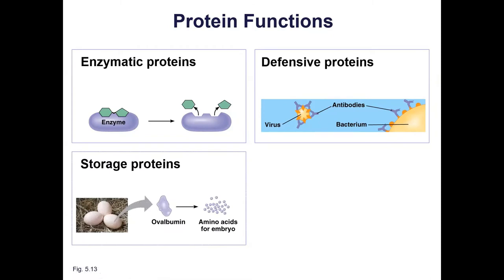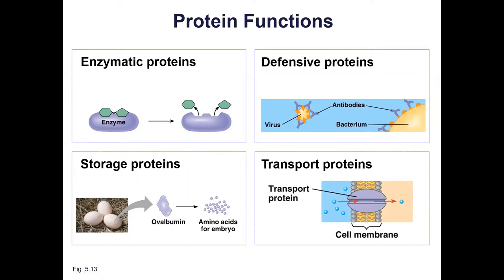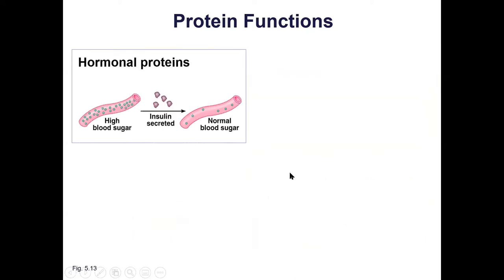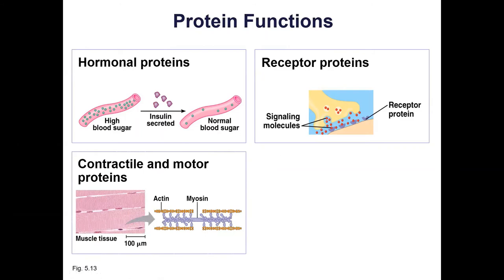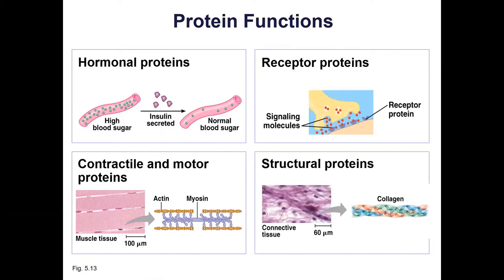Some proteins are for storage — storing amino acids, for example in chick embryos. Some proteins are involved in transport; we're going to talk about transport proteins when we discuss cell membranes. Some proteins are hormones like insulin. Some proteins are receptors, involved in transmitting signals along neurons and muscles. Some proteins are part of muscles, important if you're a mammal and want to move around. And some are structural, like collagen and keratin — things in your skin and hair.